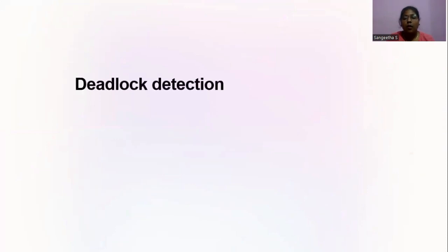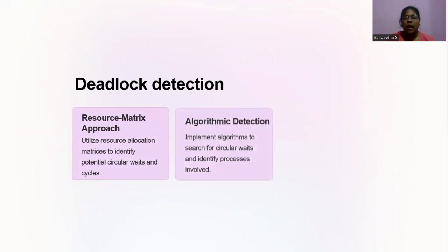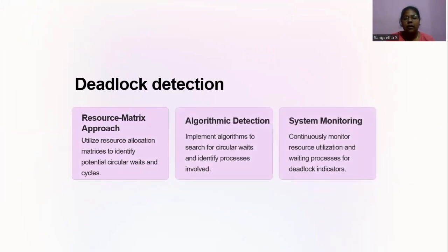Deadlock detection — how we can detect the deadlock? There are three types of detecting deadlocks: resource matrix approach, algorithm detection, and system monitoring. Resource matrix approach: utilize resource allocation matrices to identify potential circular waits and cycles. Algorithm detection: implement algorithms to search for circular waits and identify processes involved. System monitoring: continuously monitor resource utilization and waiting processes for deadlock indicators.